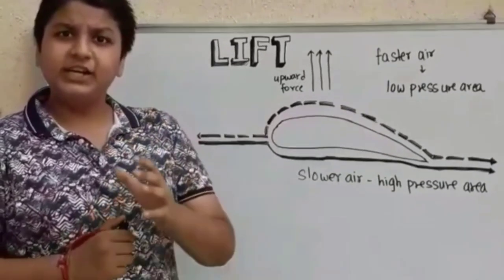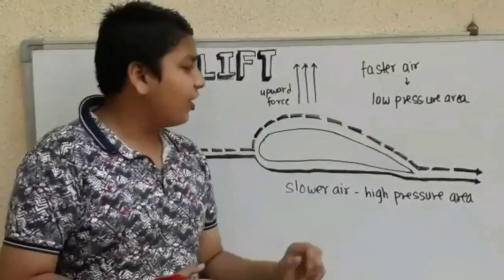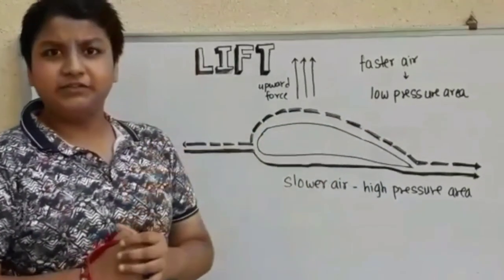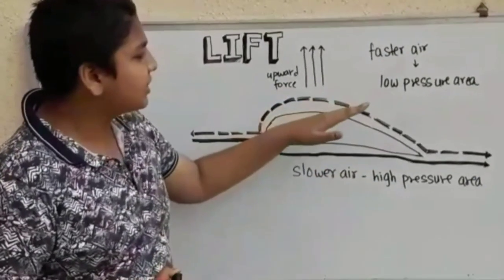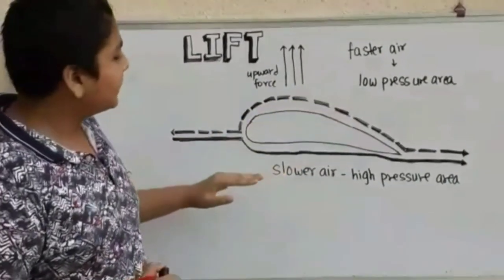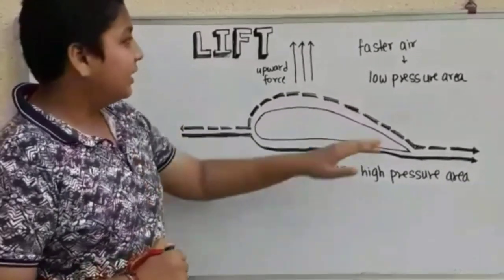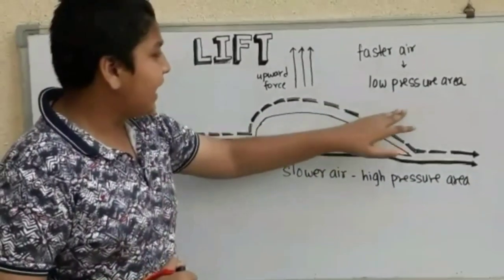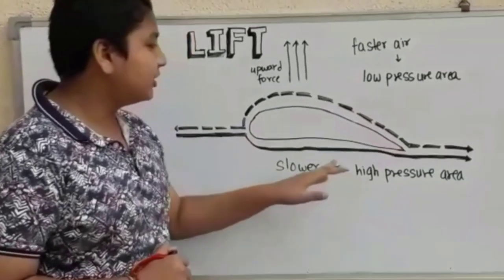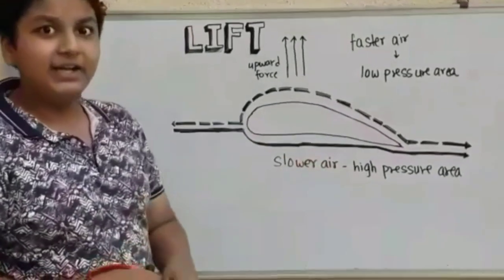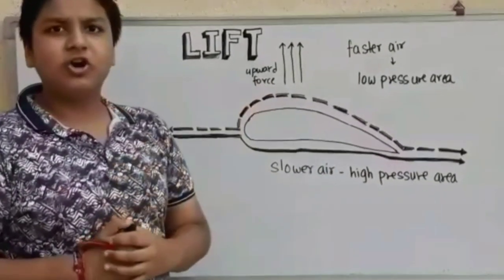In an aircraft, lift is generated as a difference in pressure on both sides of the wings. The air moves faster on the upper side of the wing and slower at the bottom side, creating a low pressure area at the upper side and a high pressure area on the bottom side, resulting in an upward force.